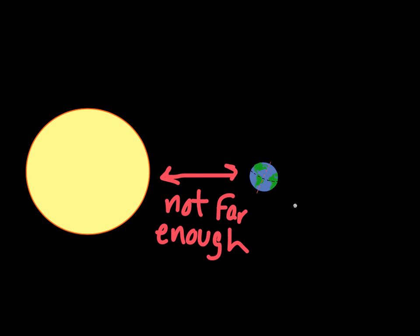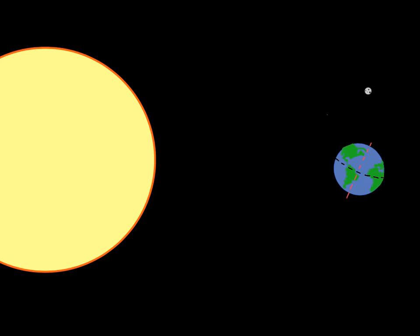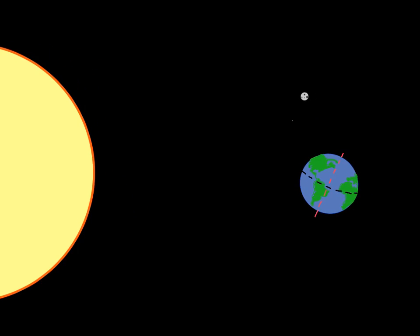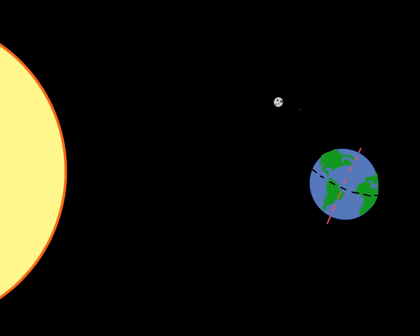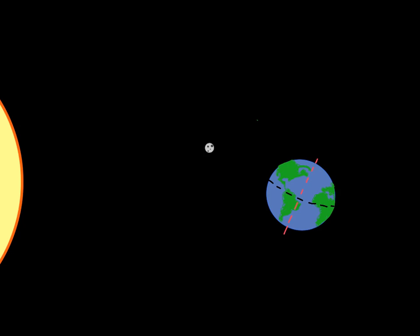If we zoom out just a little bit more, we see the sun, moon, and Earth — this is not to scale or even close, by the way. And depending on where the moon is around its orbit and where the sun is, the Earth sees different amounts of sunlight on the moon.